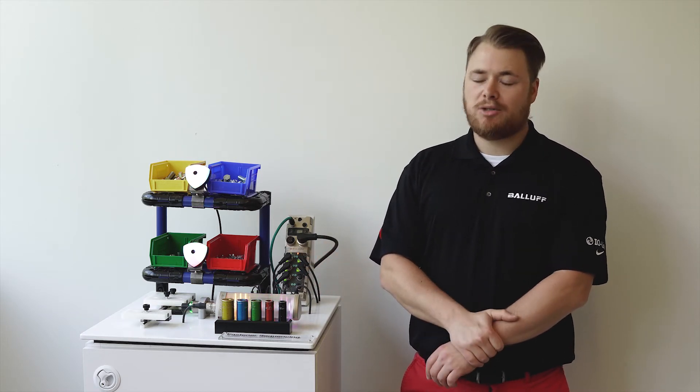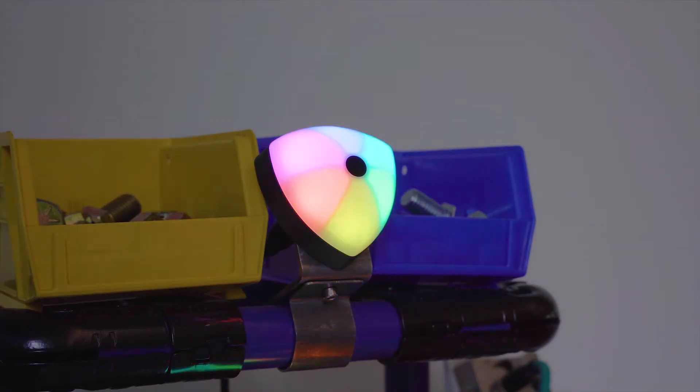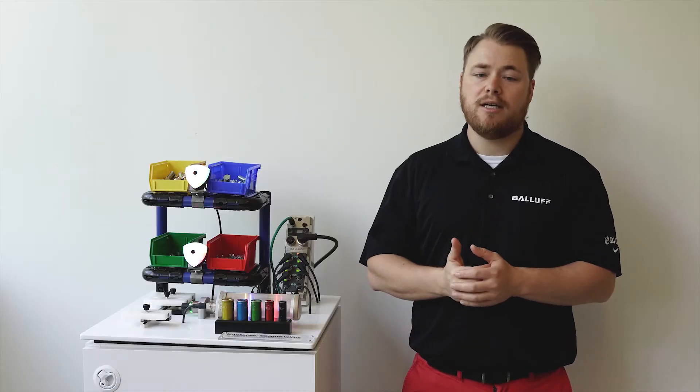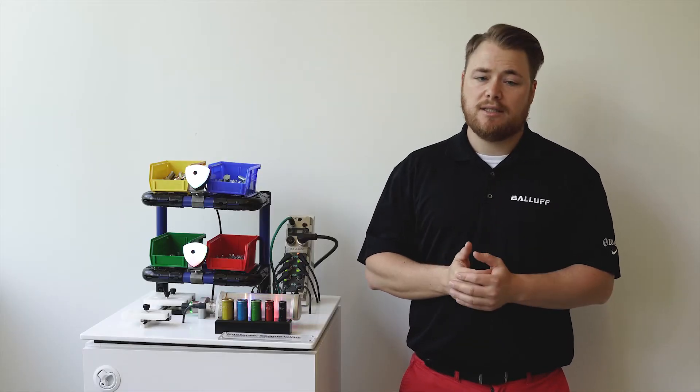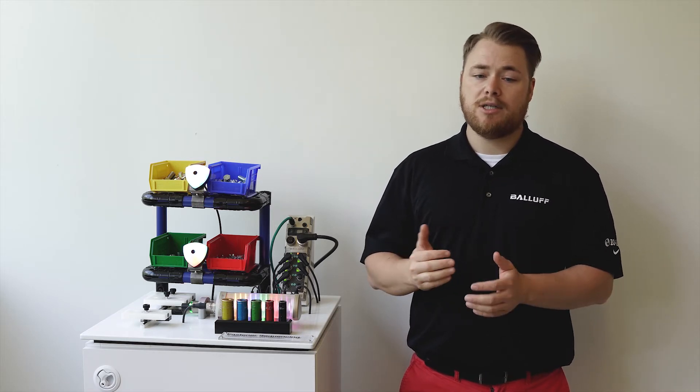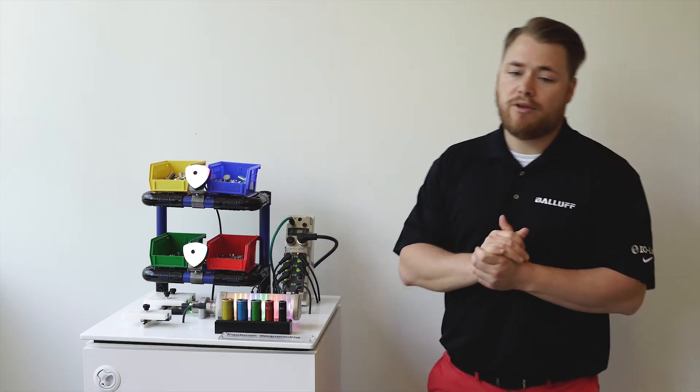This demo shows how our smart light indicators and smart light tower can work in a real-life application, along with some RFID technology and inductive or photoelectric sensors to provide operator guidance. All the information being communicated for this application is through the network going through a PLC using IO-Link.